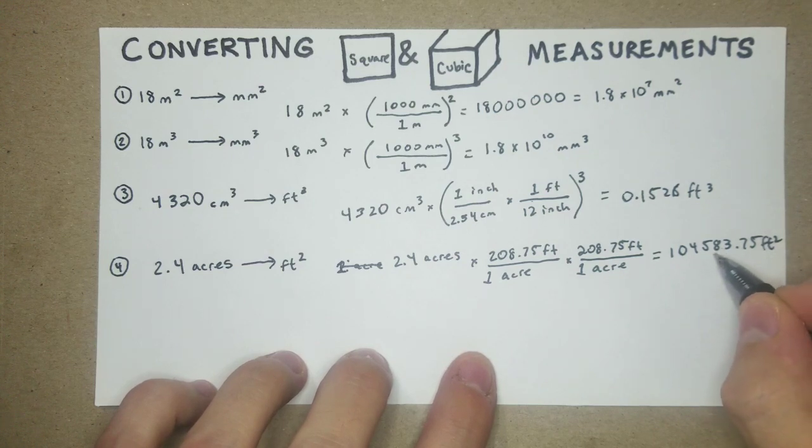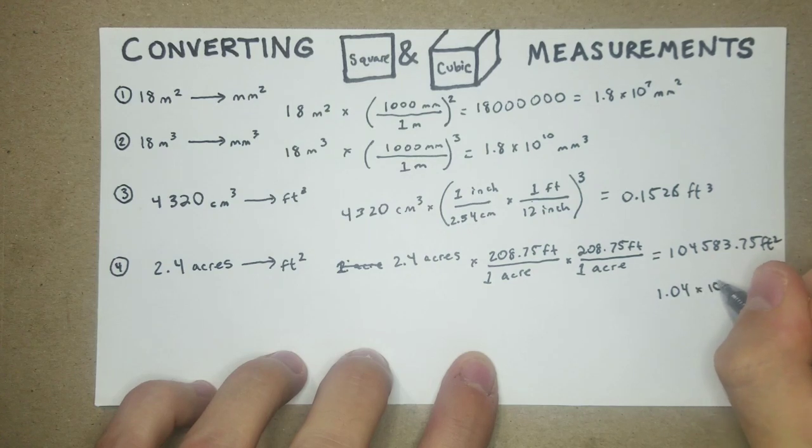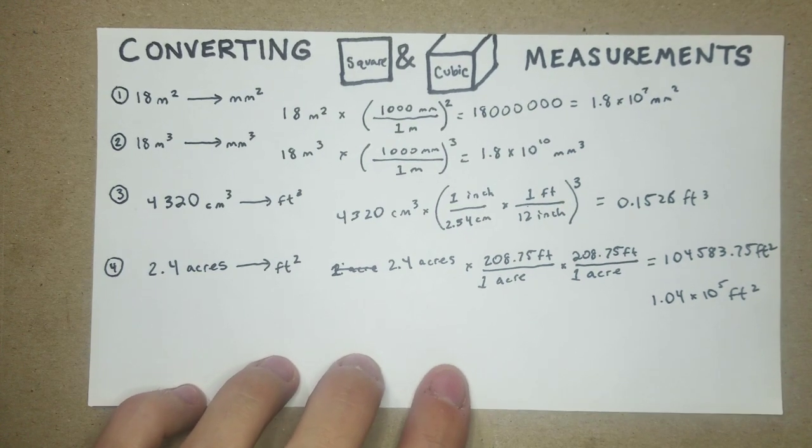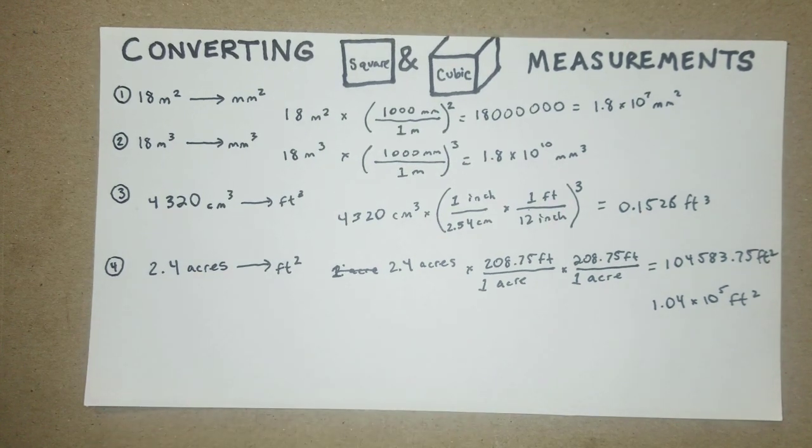I'll round that up 1.04 times 10 to the fifth feet squared. There we go. So there's a couple of problems. Hope this helps someone.